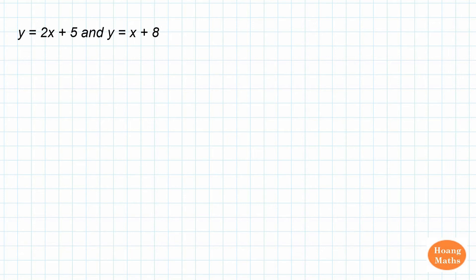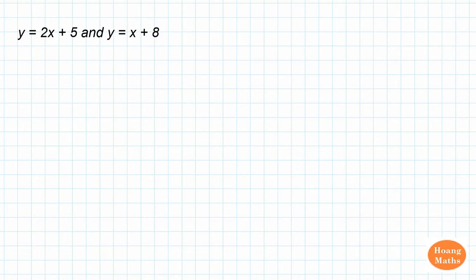If you can, please download or print out the PDF file in the description below so you can work with me. To solve this pair of simultaneous equations by substitution, we have y is equal to 2x plus 5 and also y is equal to x plus 8. So we can substitute this y here with this, because y is equal to 2x plus 5.